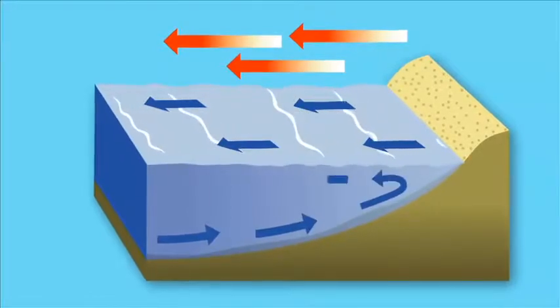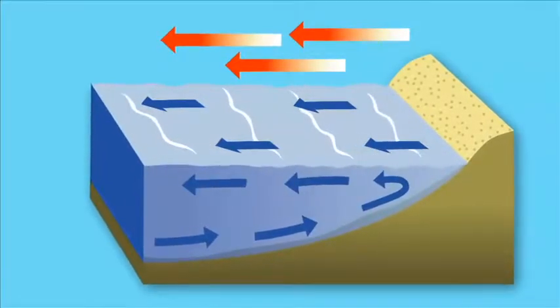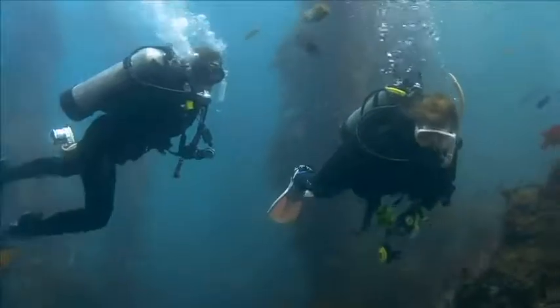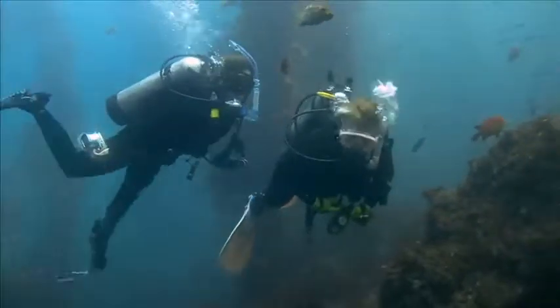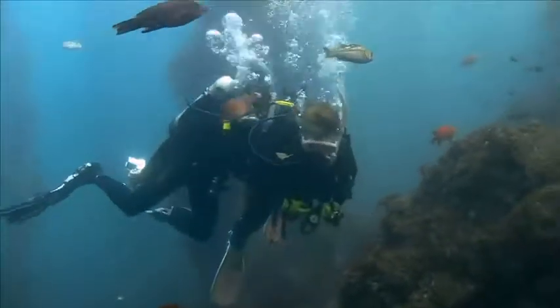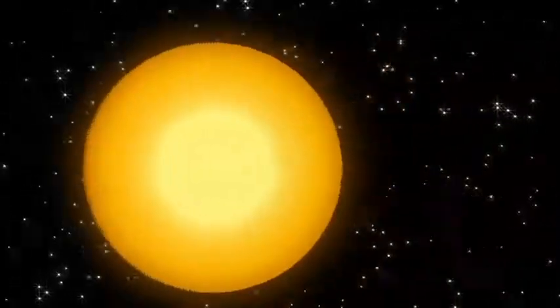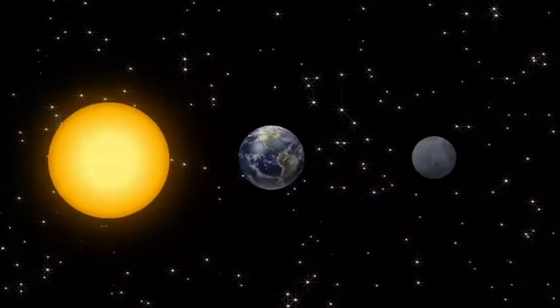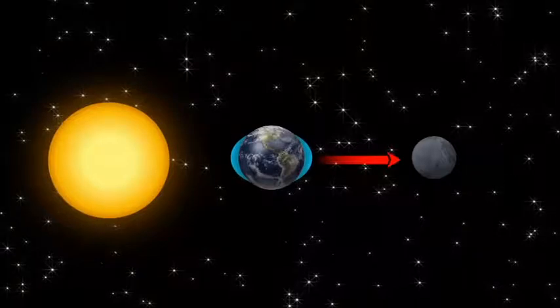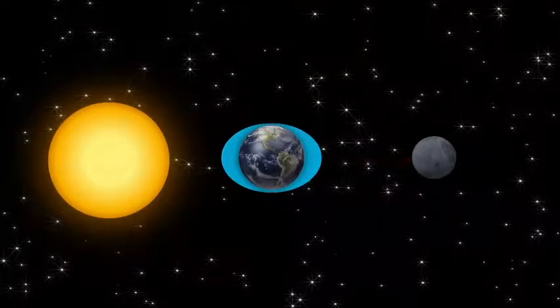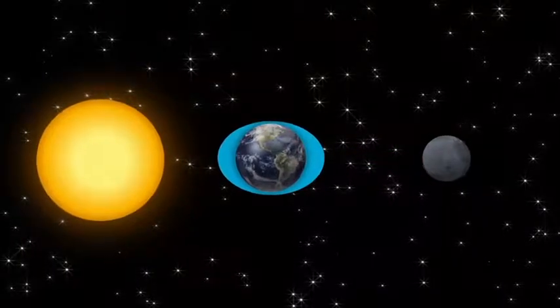涌升流往往使潜水的能见度变好，但较为寒冷，所以可能需要更保暖的潜水衣。月球和太阳的重力拉扯海洋，造成轻微突起的现象，加上地球自转就产生潮汐，也就是海平面的上升和下降。